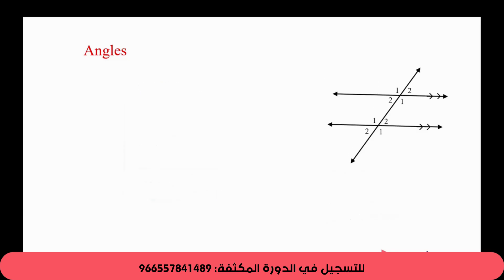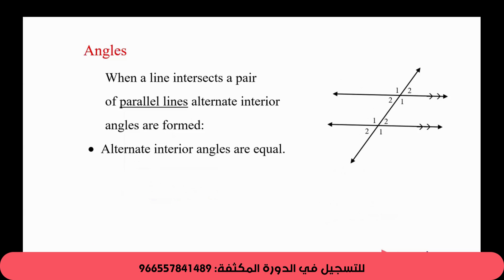Here we go. Now for two lines, if the two lines are parallel and one line intersects them, we're going to form some type of angles. We call them alternate interior, like two and two. They are equal if the two lines are parallel. So the thing we have to check is this: the two lines are parallel. So yes, the alternate interior are equivalent.